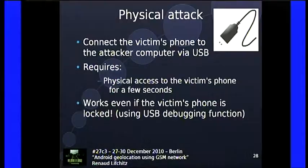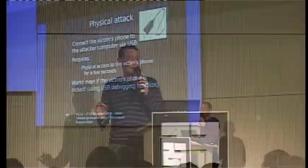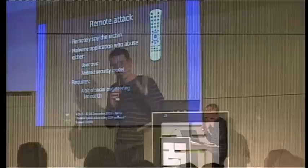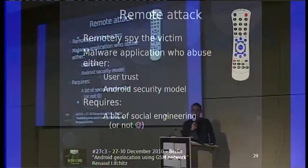For the physical attack, connect the victim's phone to the attacker's computer via USB. If you have access for just a few seconds, plug in the USB cable and dump the radio logcat — this takes only three or four seconds. It even works if the victim's phone is locked, thanks to the USB debugging function on Android.